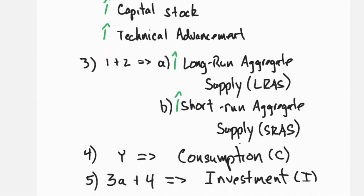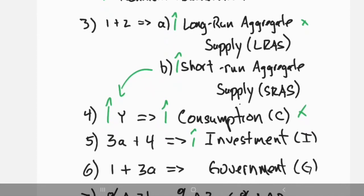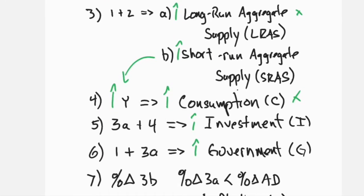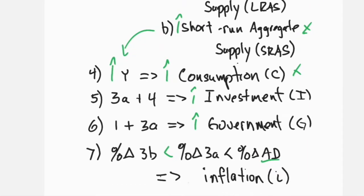Short-run growth in production leads to increased national income, which leads to an increase in consumption expenditure. Long-run growth in production capacity plus increased national income increases savings, which facilitates increased investment expenditure. Population growth plus long-run production growth increases tax revenues, implying government expenditure growth; and yearly increases in prices occur because yearly growth in supply is slower than long-term growth in supply, which is slower than growth in yearly expenditure on goods and services.